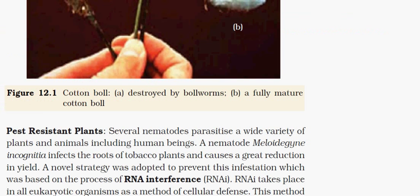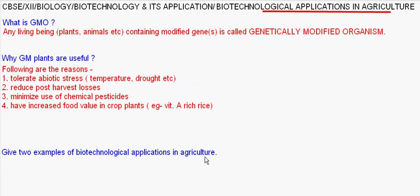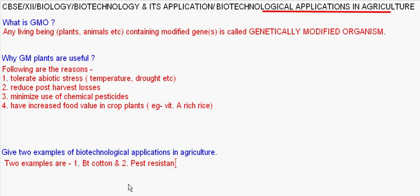Now, coming to two examples of biotechnological applications — application of biotechnology in agriculture. The two examples are: Bt cotton and pest-resistant plants. We will now discuss Bt cotton and pest-resistant plants in detail.